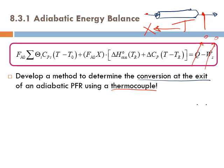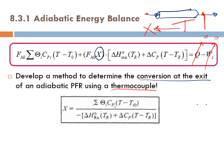We use the energy balance and simplify it for the adiabatic case — the heat term is zero, and in a plug-flow reactor there is no shaft work. We solve for X in terms of T. So we can plug in the temperature measured by the thermocouple into this equation and get the conversion X.